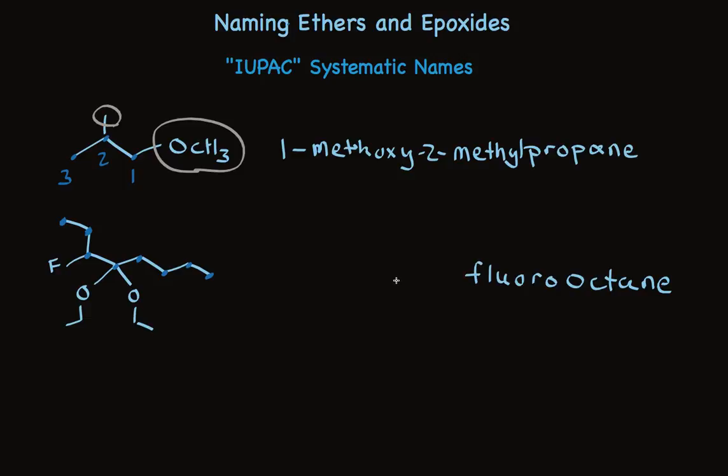We'll leave a space for the number, and we'll write diethoxy. There are two ethoxy groups. We'll number the chain from the end that's closest to a substituent, which makes this 3-fluoro-4,4-diethoxy octane. And there you have it.